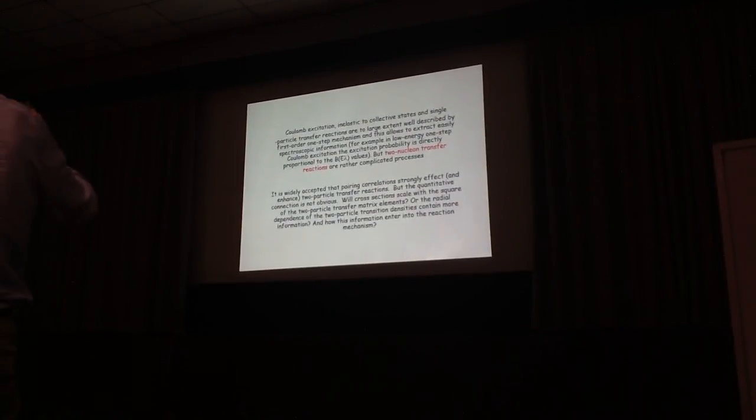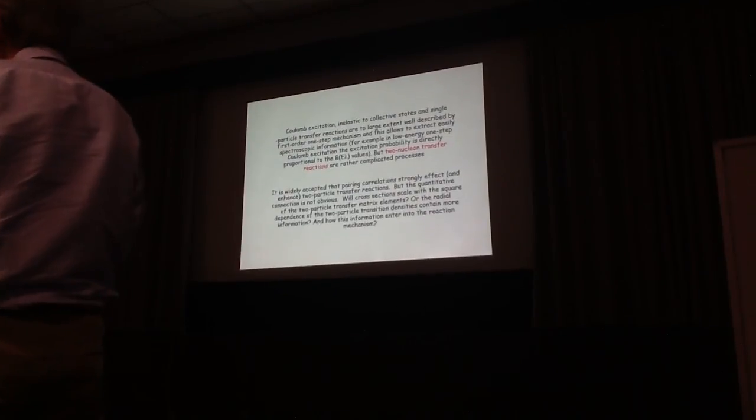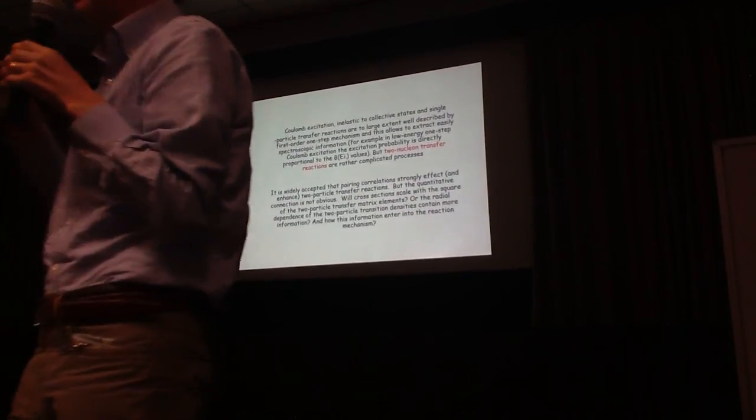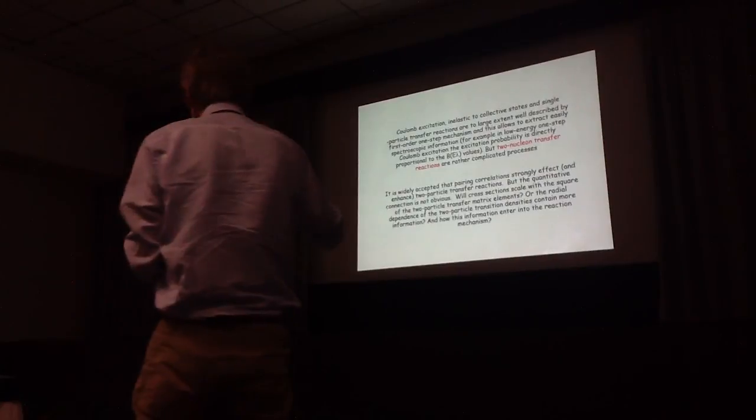For example, if you do Coulomb excitation, in a certain limit, Coulomb cross-section becomes directly proportional to the B-Lambda. In that case, it's trivial to extract information from a reaction point of view. But in the case of two-nucleon transfer reaction, the mechanism is obviously more complicated. And the process of extracting information is not so simple.